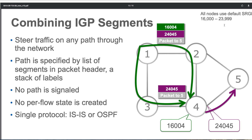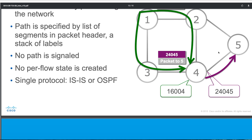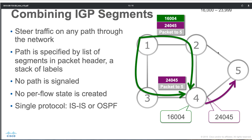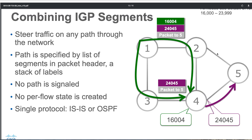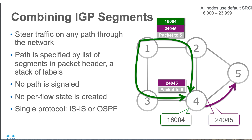That's how a router can combine both global prefix segments and local adjacency segments while creating this ordered segment stack. All nodes in this example use the same SRGB block. That was a brief introduction to segment routing, and now we'll go ahead and take a look at the next section.